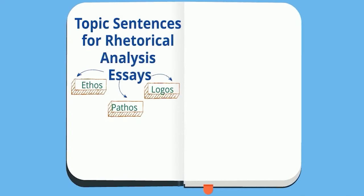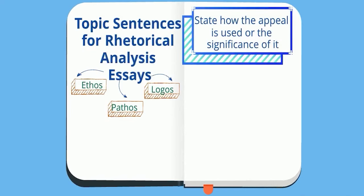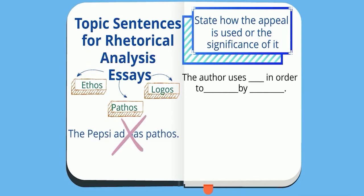If you're writing a rhetorical analysis essay or examining the rhetorical appeals, each paragraph can focus on how or why an author uses a specific appeal. Instead of 'the Pepsi ad has pathos,' follow the template of 'the author uses [whichever appeal] in order to' and then state their reasoning for using that appeal and the strategy that's used.